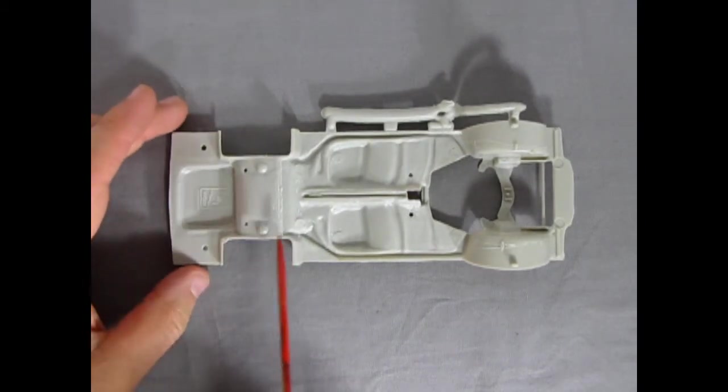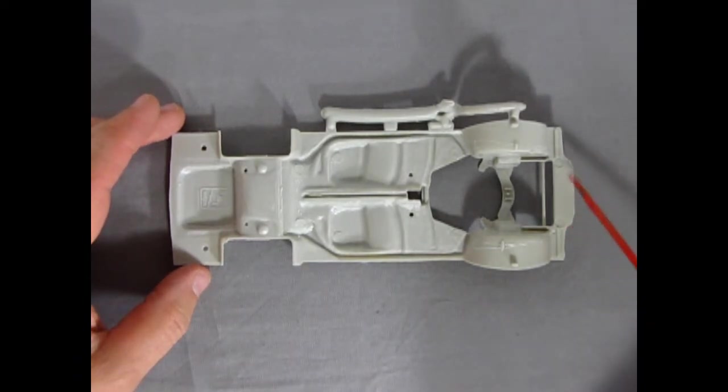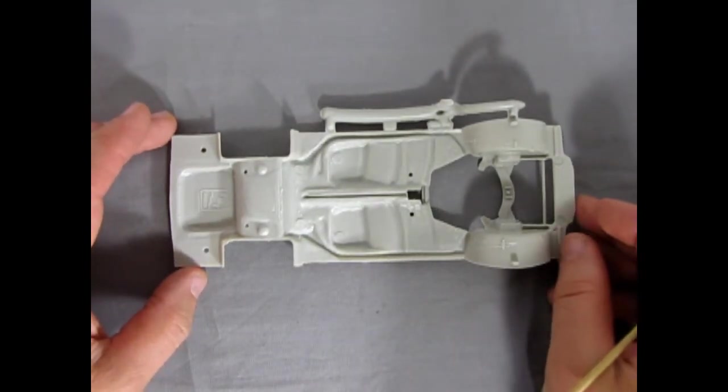Next up we have our chassis pan here. Our chassis pan. And as you can see there are some big mold marks in there. So fill them up with some putty and sand are smooth.